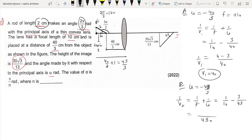And this is equal to 4 times 30, so 43 minus 3. Therefore V2 equals 430 upon 40.